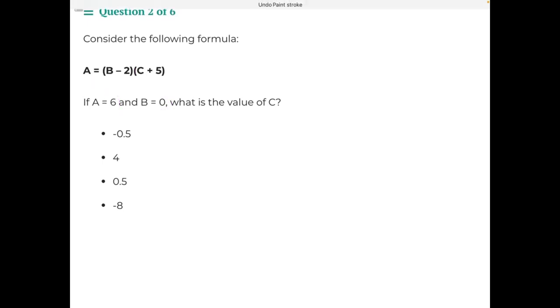Let's start by substituting in our values. A is 6, so 6 equals, instead of B, we put 0 minus 2, and we don't know C yet, so C stays the same.